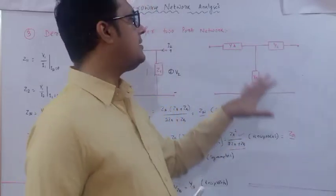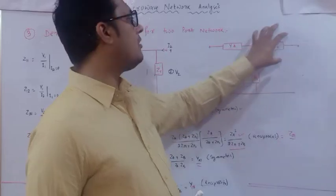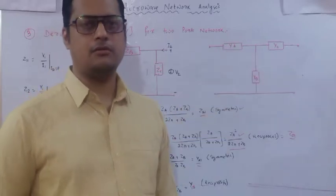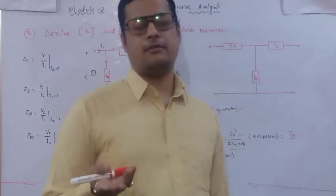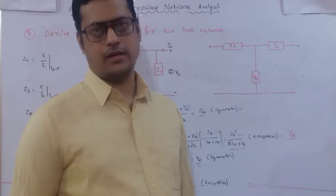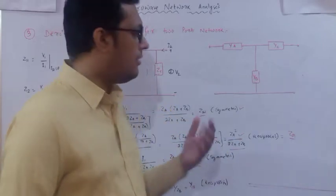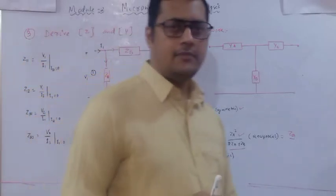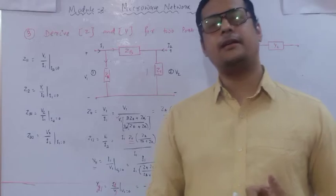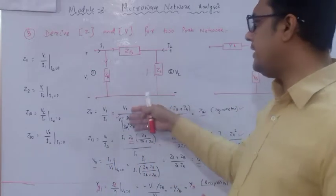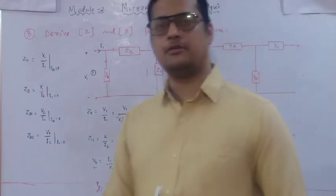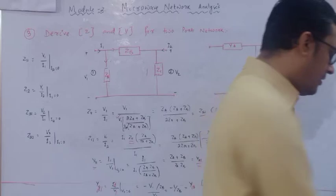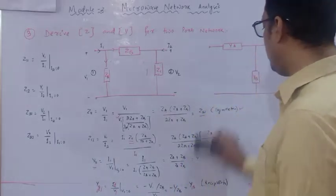For the T-network, this is your task to solve. First open-circuit the port - there is no contribution from YC, only from YA and YB. With this you can determine Y11, Y12, and apply symmetry and reciprocal conditions so that Y11 equals Y22 and Y12 equals Y21. Then convert the admittance matrix to the impedance matrix using the known Y-to-Z relations.